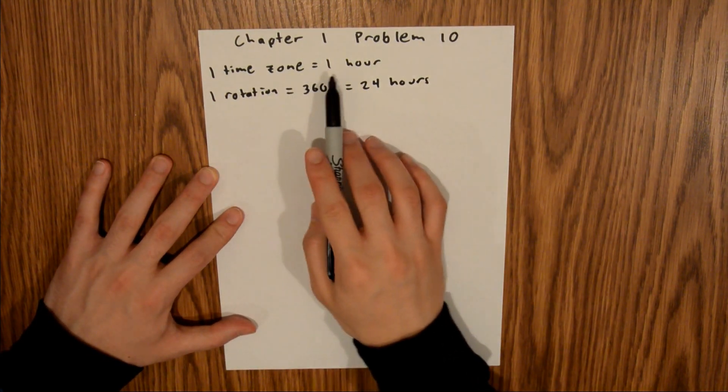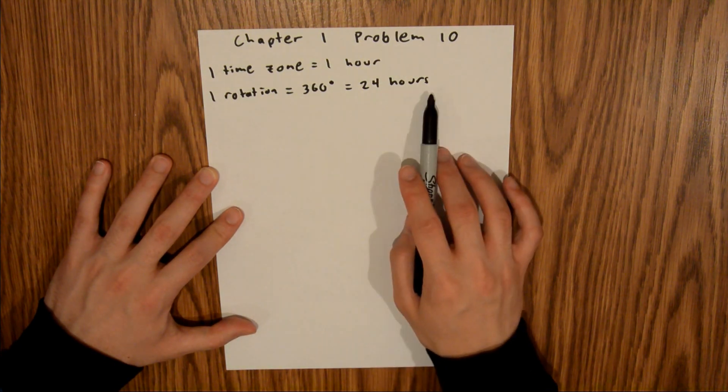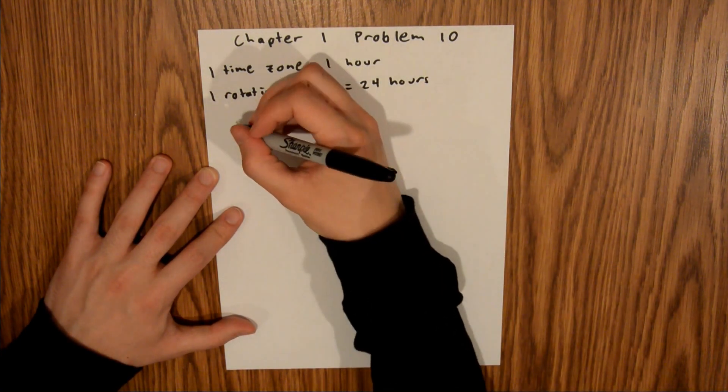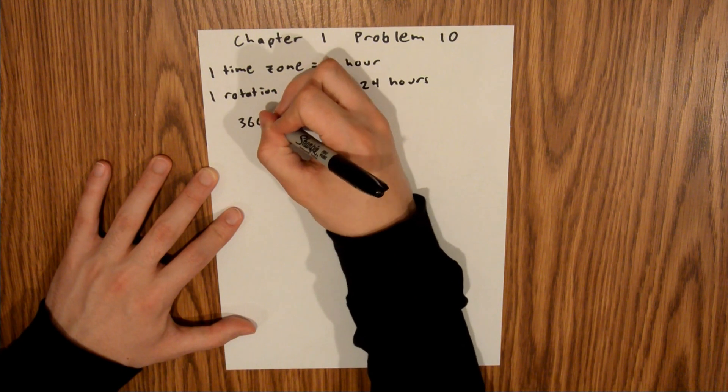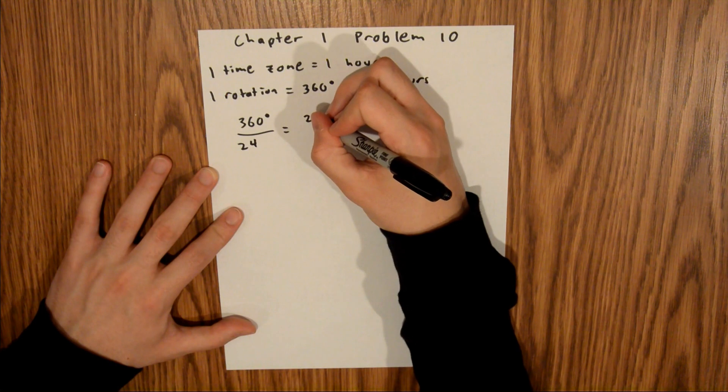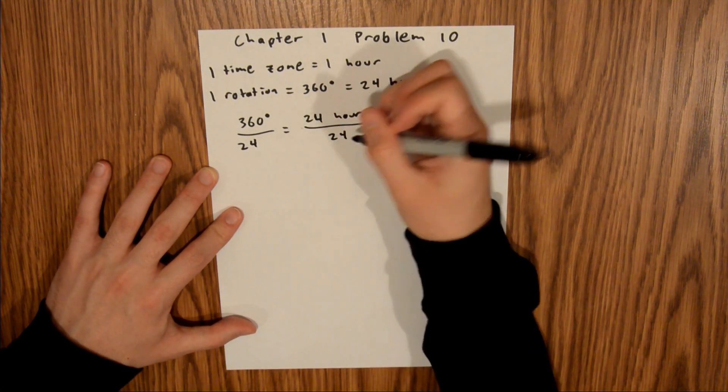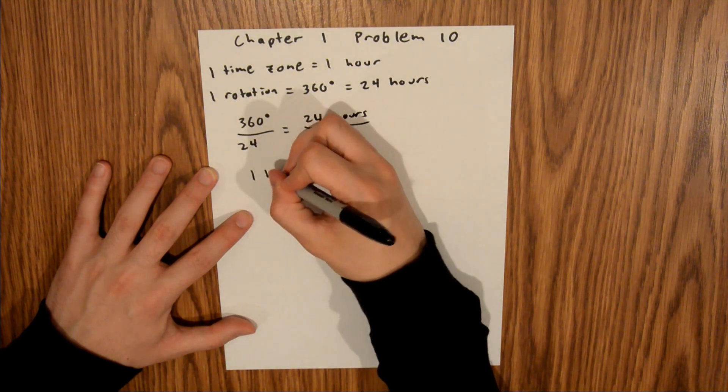And so since we're looking for one time zone, which is one hour, we can take this equation right here and divide both sides by 24. So 360 degrees over 24 equals 24 hours over 24, which means that traveling one hour,